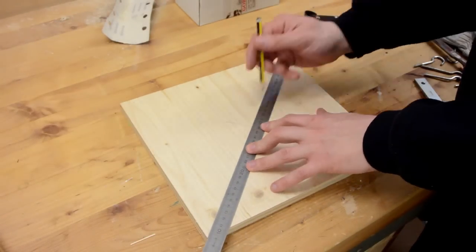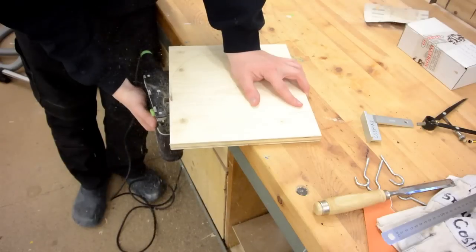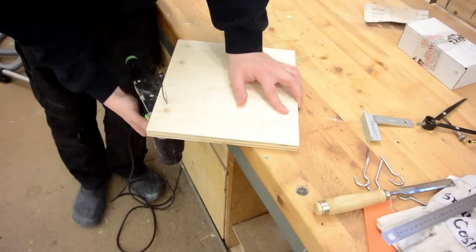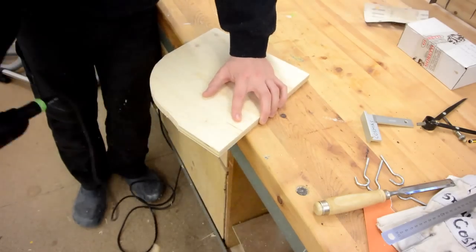First I drew a circle on a piece of plywood and then I cut it out using the jigsaw. Using it upside down makes it easier to see where you're actually cutting.